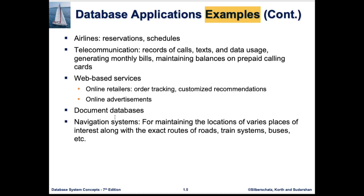Another example is navigation systems. They need a system to store locations of various places of interest along with exact routes, roads, train systems, buses, and so on. Applications like Google Maps and Waze use and store this information in a database system.